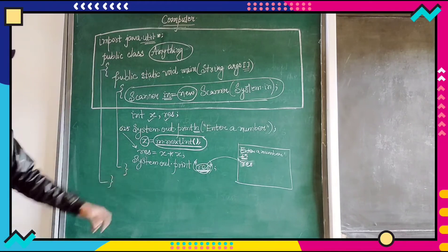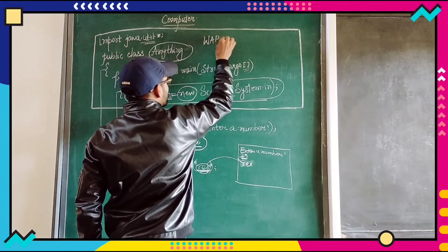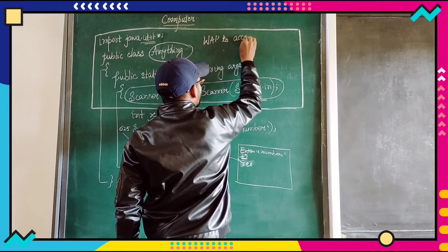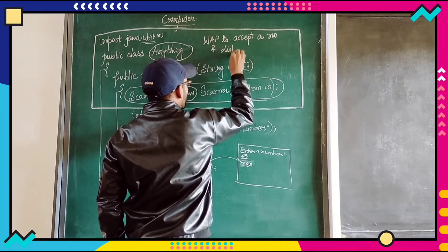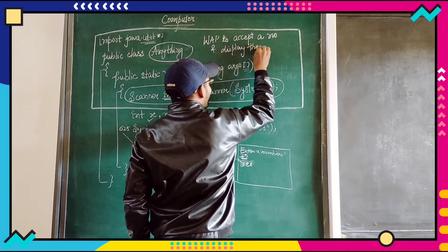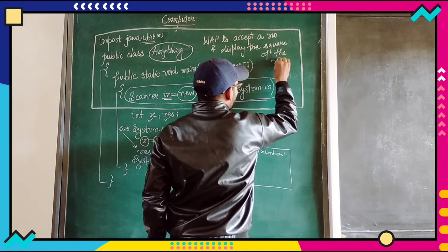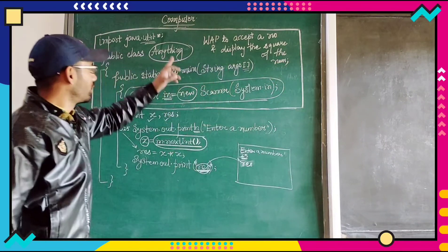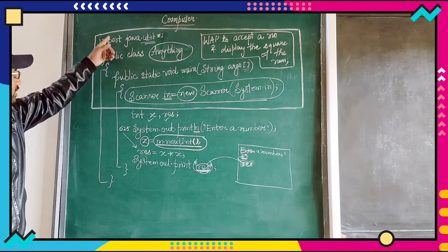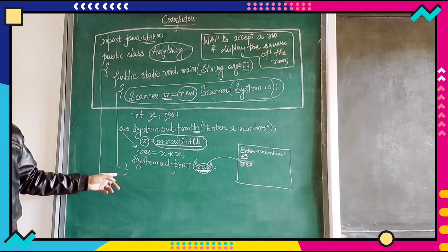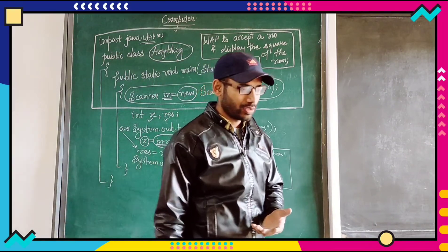So this is the program. What was the purpose of the program? To accept the number and display the square of the number. So this was the program for this very particular question. You are supposed to do this. So similarly many of the programs I will show you in my next video.